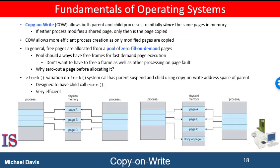One technique provides rapid process creation and minimizes the number of new pages that must be allocated to the newly created process. Remember that the fork system call creates a child process that is a duplicate of its parent. Traditionally, fork worked by creating a copy of the parent's address space for the child, duplicating the pages belonging to the parent. However, considering that many child processes invoke the exec system call immediately after creation, the copying of the parent's address space may be unnecessary.